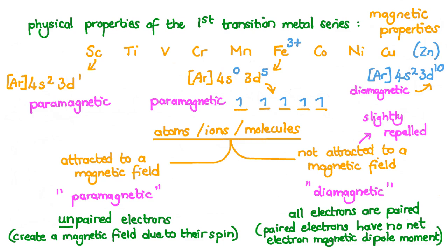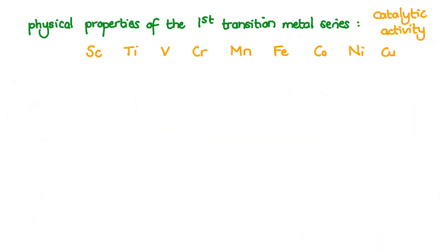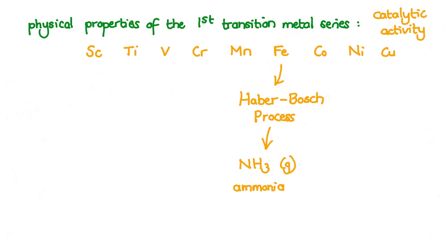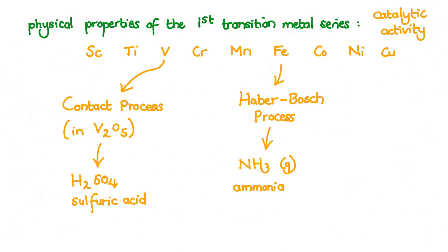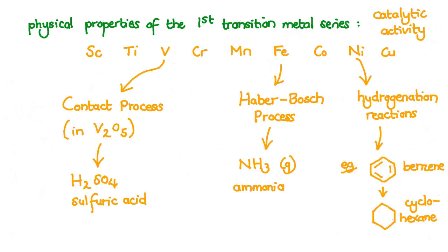Many transition metals are very useful in industry due to their excellent catalytic activity. For example, iron is used in the Haber-Bosch process for the production of ammonia. Vanadium in the form of V₂O₅ is used in the contact process for the production of sulfuric acid. Nickel is used in a variety of hydrogenation reactions; an example using Raney nickel is the hydrogenation of benzene into cyclohexane. Transition metal catalysts are covered in more depth in another video.